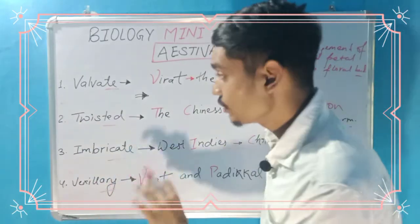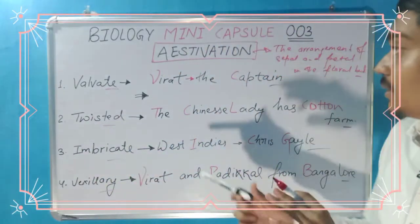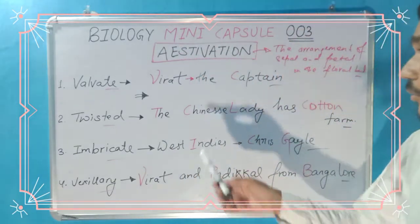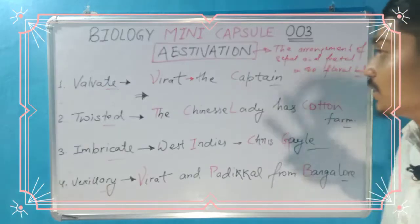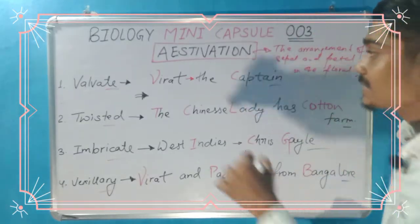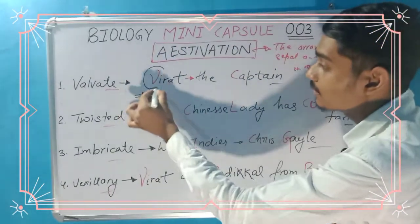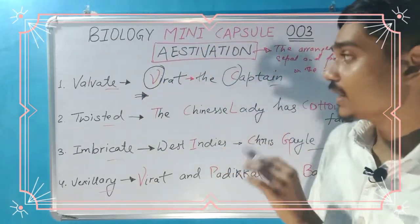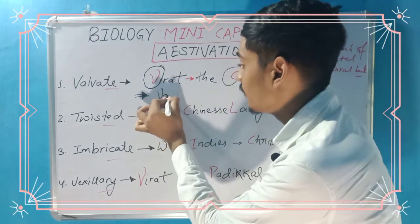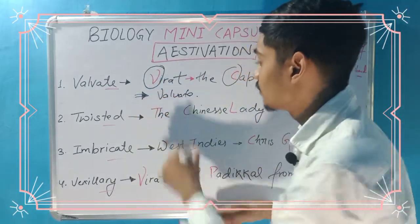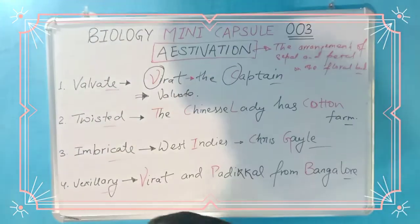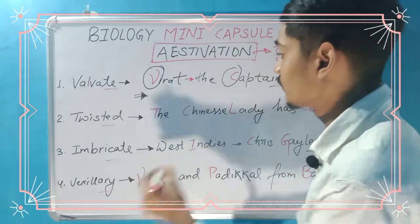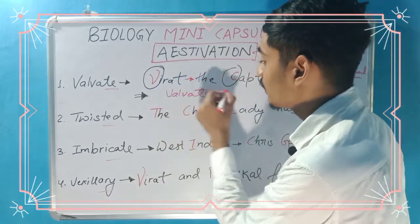Now we will learn the examples. First of all, see the valvate. Here V is in red color and C is in red color. So V denotes valvate, and the example you can notice here easily — the valvate example is Calotropis.